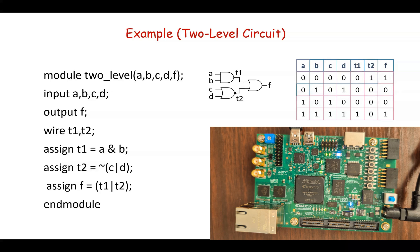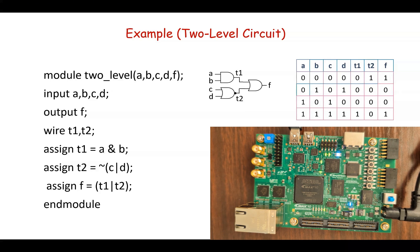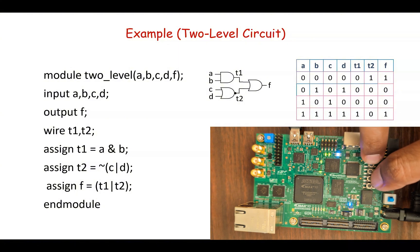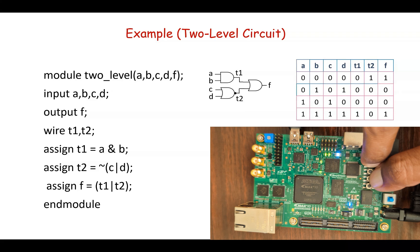Next, if we have a as 0, b as 1, c as 0 and d as 1, then the output should be 0. Now this is a and this is c. If we press these two you can see the LED is off.